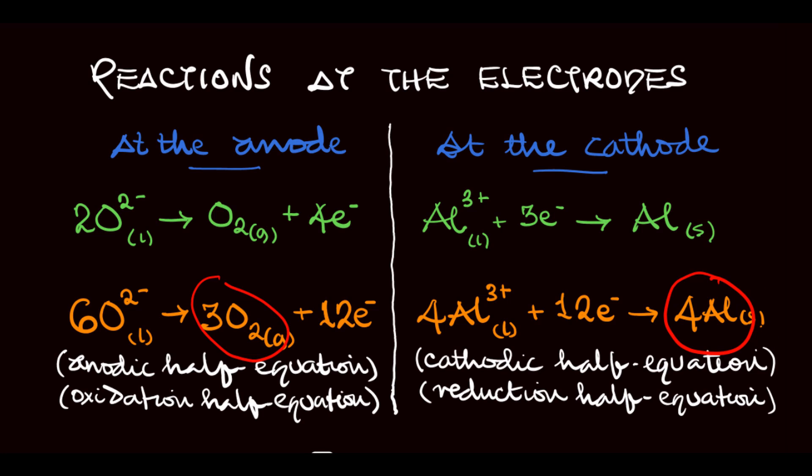By doing this, we can see that the product at the anode is oxygen while the product at the cathode is aluminum. With this we have successfully carried out the extraction of aluminum from bauxite. But that's not all. The process comes with its own setbacks or disadvantages. Let's see what those disadvantages are.